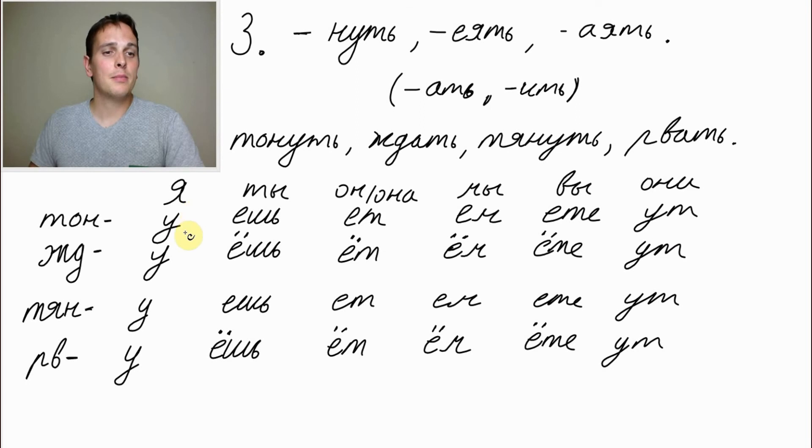I am tearing apart. I am tearing. Я рву. You are tearing. You are tearing apart something. Ты рвёшь. Он, она, he, she is tearing. Она рвёт. Он рвёт. We are tearing apart. Мы рвём. You in plural or in polite form, we are tearing apart. Вы рвёте. And they are tearing apart. Они рвут.